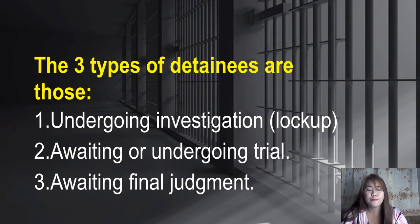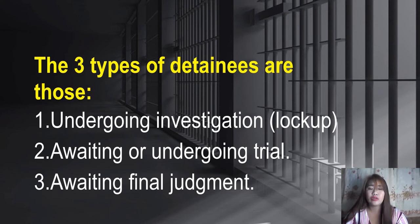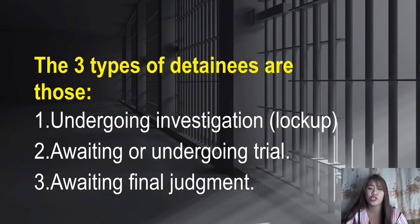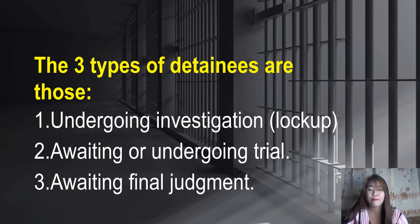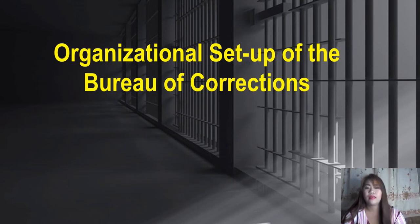There are three types of detainees: first, those undergoing investigation — their case is still being investigated, commonly placed in a lock-up jail inside a police station; second, those awaiting or undergoing trial — still in the hearing stage with no final decision; and third, those awaiting final judgment — waiting for the court's decision. These are the three types of detainees.